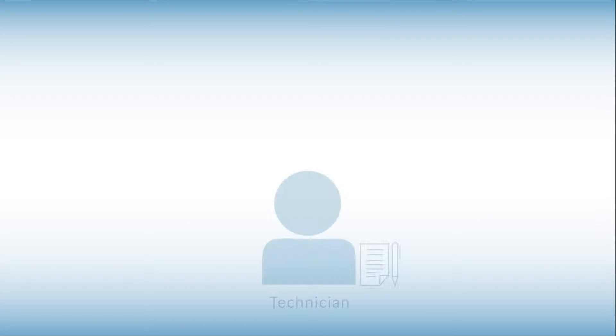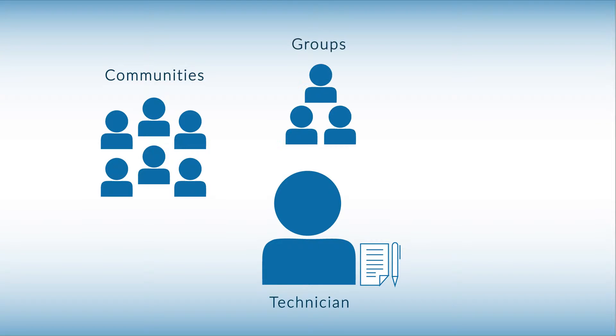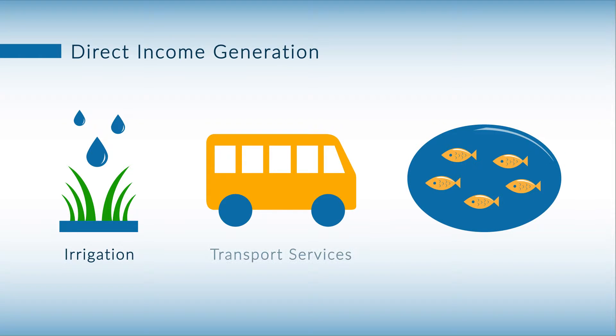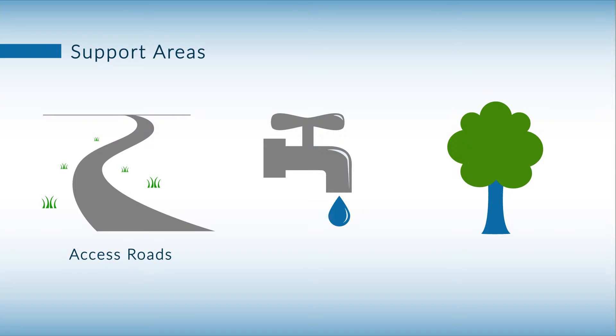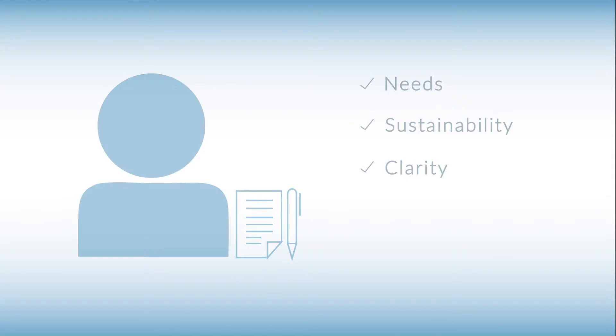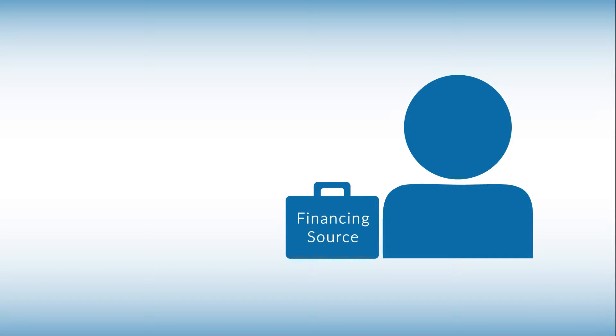RuralInvest is designed to assist national technicians working with communities, groups or individuals who wish to improve their quality of life through local level investments, whether in activities which will directly generate income, such as irrigation, transport services or fish farming, or in support areas such as access roads, water supply or reforestation. RuralInvest helps field staff to ensure that all investment proposals presented by applicants respond to their real needs, will be sustainable over time and will be clearly understood by the potential financing source, whether that be a development project, an NGO or a bank.